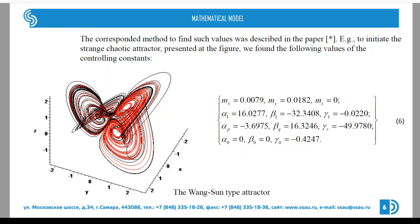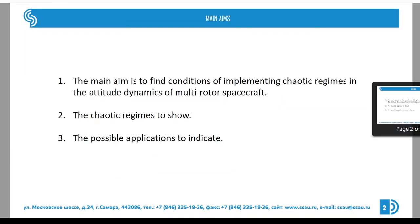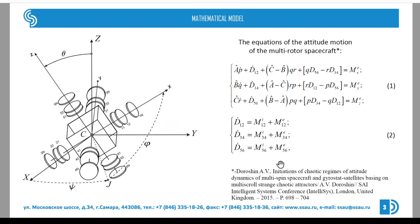The corresponding method to find such values was described in the paper. This paper is titled 'Initiations of chaotic regimes of attitude dynamics of multi-spin spacecraft and gyro-stat satellites basing on multi-scroll strange chaotic attractors,' presented at the PSI Intelligence Systems Conference in London, United Kingdom.